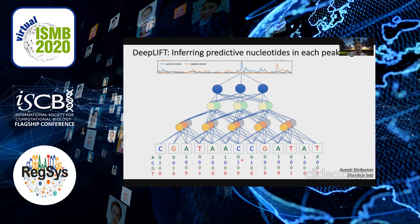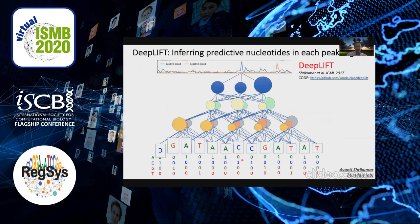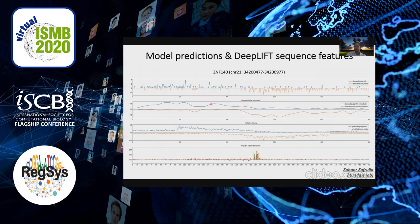From DeepLIFT you learn which regions the model finds predictive of DNA binding. Some of these results are shown here: for ZNF140, we see that we can actually predict the profiles pretty well. The blue is the positive strand profile and the orange is the negative strand profile. More importantly, DeepLIFT highlights the sequence learned to be very important for DNA binding for ZNF140.